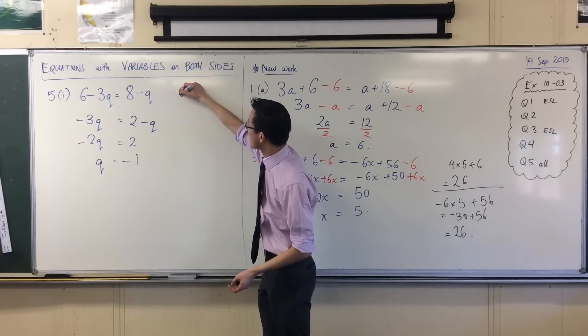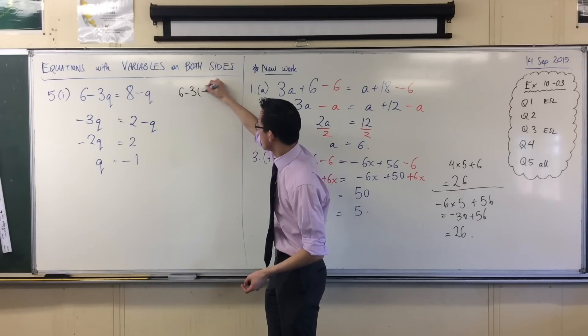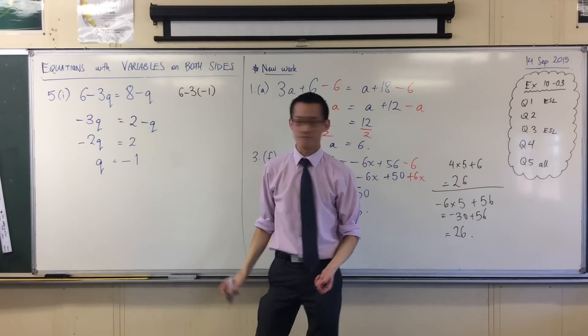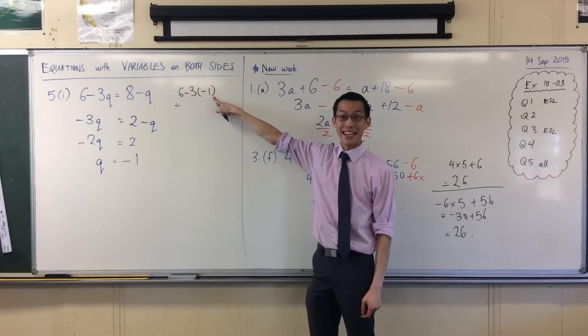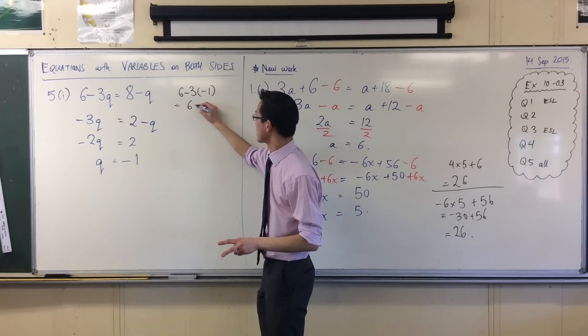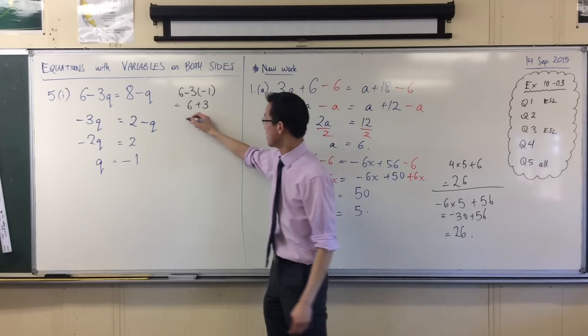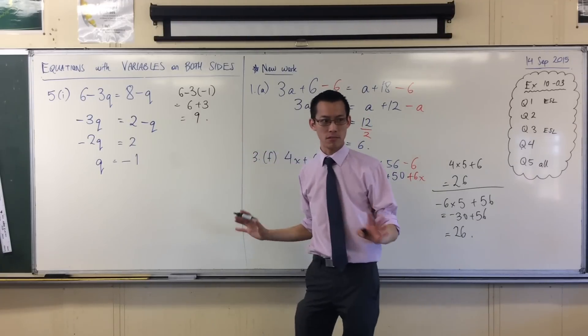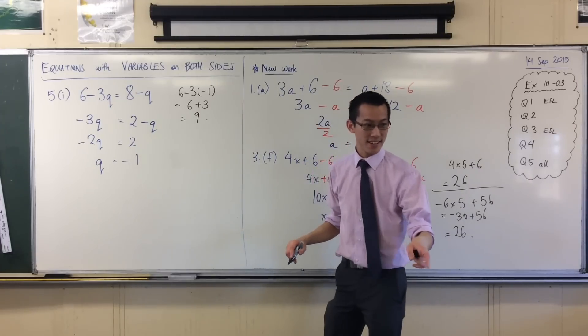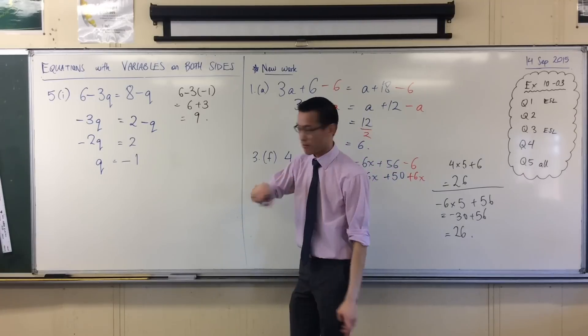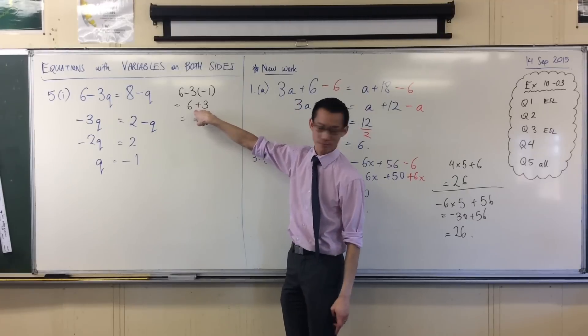On the left-hand side, I'm going to get 6 take away 3. 3 what? 3 lots of minus 1. What's minus 3 times minus 1? What happens to those two negatives? They cancel, don't they? So I get 6 plus 3. You see how those negatives have crashed into each other? 6 plus 3, of course, is 9. That's right. Which is why I've gotten this. I've got 2 negatives. 2 negatives become that positive. Good pick up.